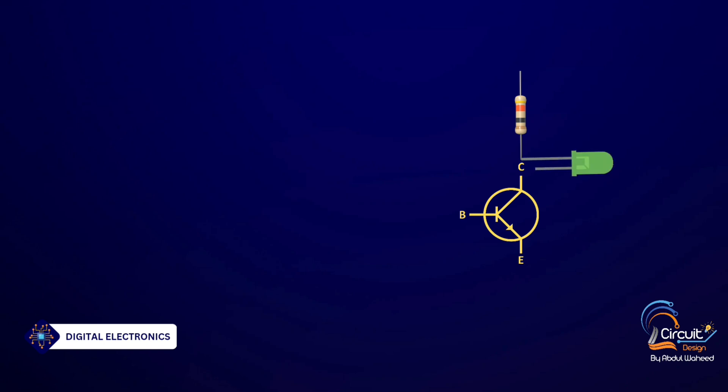Connect a light emitting diode to collector of the transistor and its cathode is grounded. Connect the emitter of the transistor to the ground using a piece of wire.